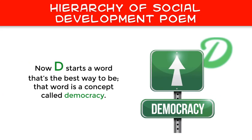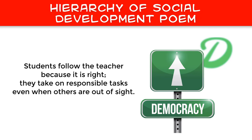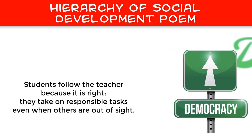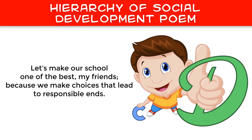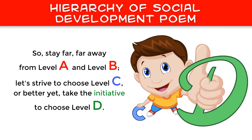Now D starts a word that's the best way to be. That word is a concept called democracy. Students follow the teacher because it is right. They take on responsible tasks, even when others are out of sight. Let's make our school one of the best, my friends, because we make choices that lead to responsible ends. So stay far, far away from Level A and Level B. Let's strive to choose Level C, or better yet, take the initiative to choose Level D.